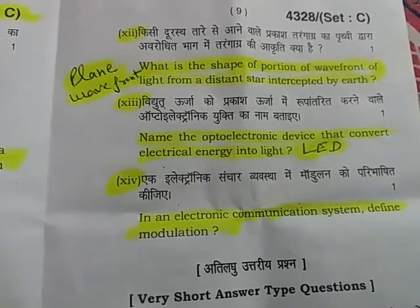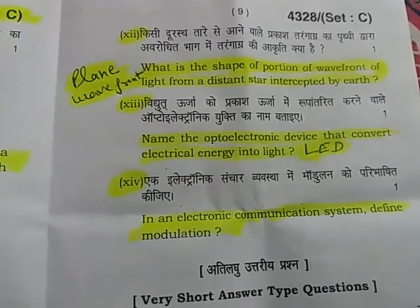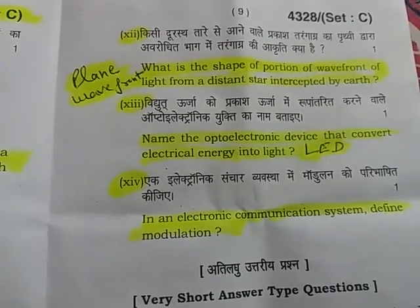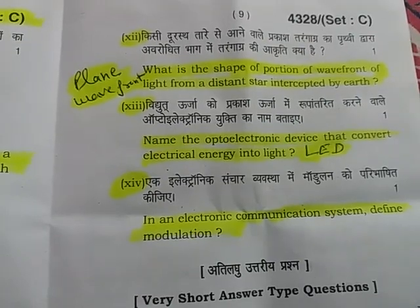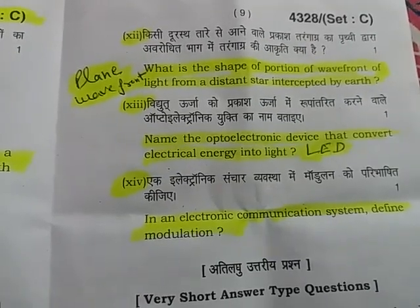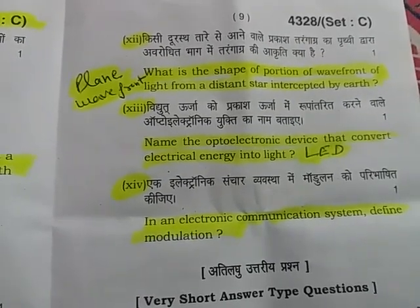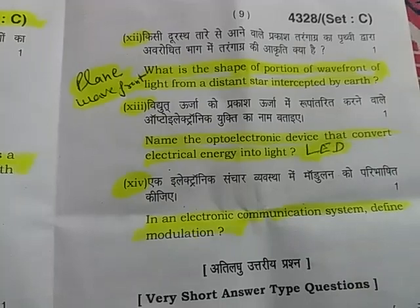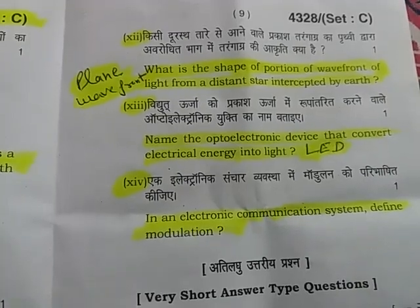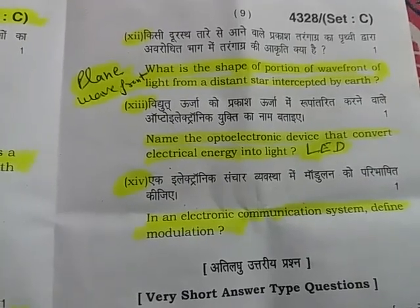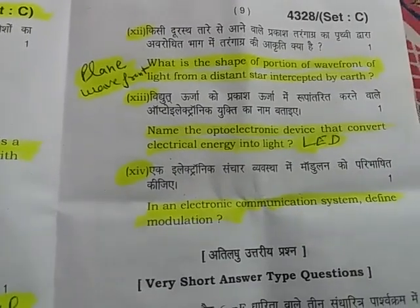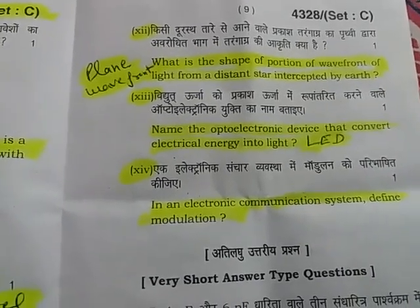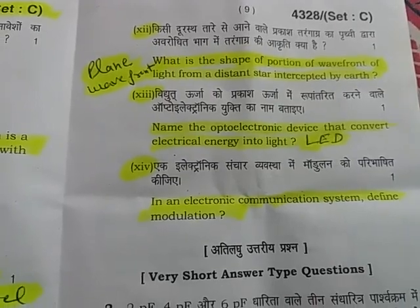Thirteenth part: Name the optoelectronic device that converts electric energy into light energy. The answer is LED — Light Emitting Diode. The 14th part involves definitions.